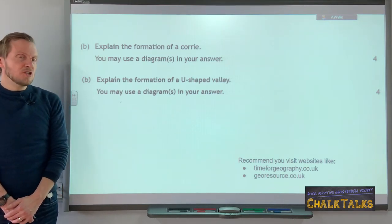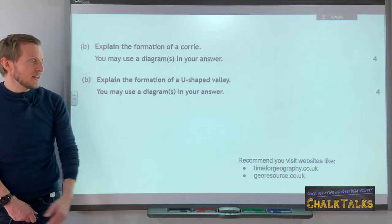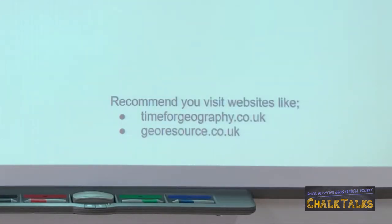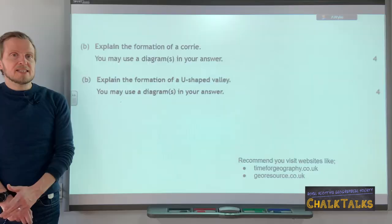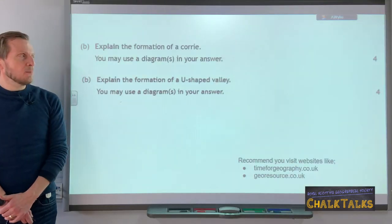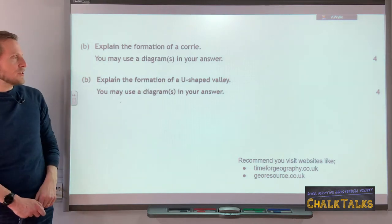If you want a little bit more revision on this, you may choose to visit the Time for Geography website, which explains all of these features in quite a lot of detail. You'll also get some good diagrams on how to draw a Corrie, Pyramidal Peak, Arete, and U-shaped valley from the GeoResources website. Let's have a look at an approach you could take for these two features.